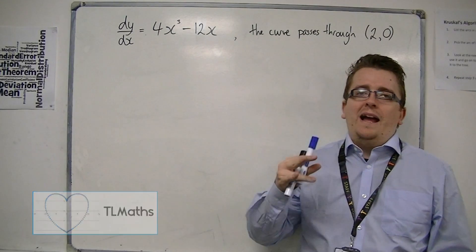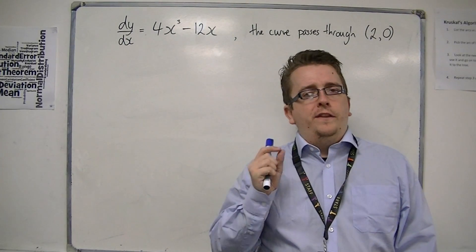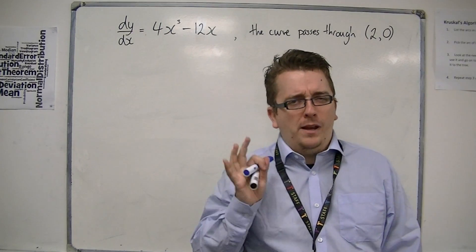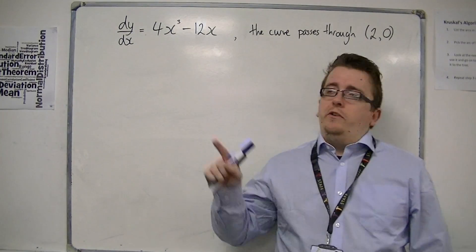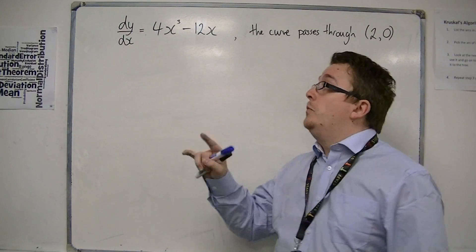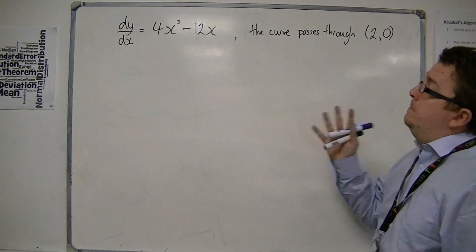In this video we're going to be looking at how we can calculate the constant of integration, that plus c that I've introduced in the previous videos. We're going to start off with this differential equation, dy by dx is 4x cubed minus 12x.